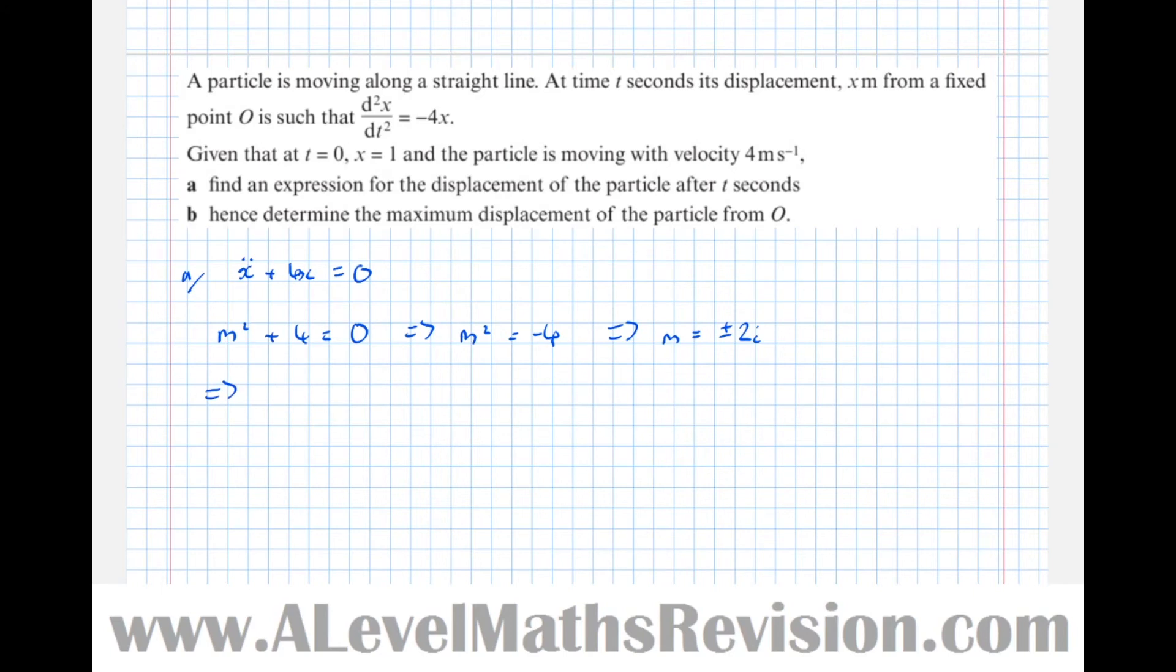This implies that the solution x equals some constant a times sine of 2t plus b cos of 2t.